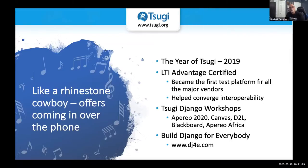I declared that 2019 was going to be the year of Sugi LTI Advantage. It was coming to a close around the June timeframe. Sugi was the first actual real piece of software as a tool that was Advantage certified. It became the test platform for all the major vendors — I spent the summer working with Canvas, D2L, Blackboard, and Moodle, giving them servers, and they still use those servers to this day.